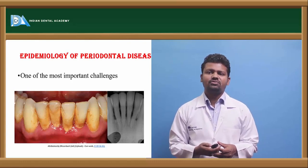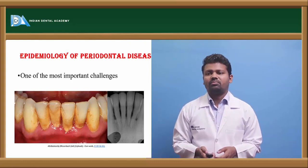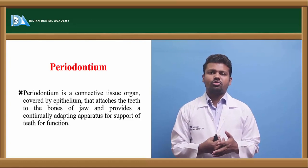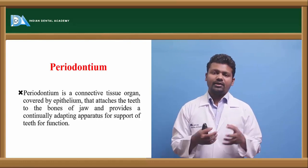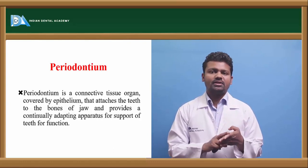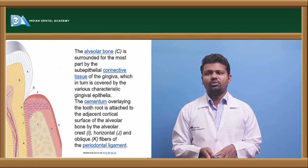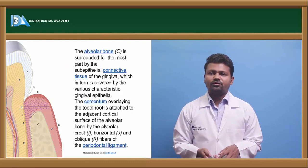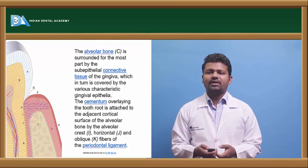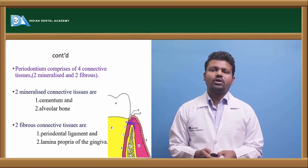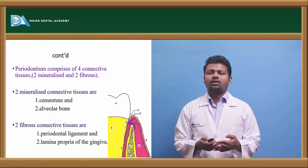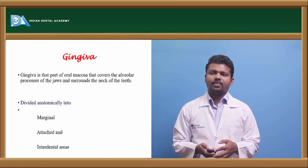Epidemiology of periodontal disease is one of the most important challenges in dentistry. The periodontium is a connective tissue organ covered by epithelium and attached to the teeth and jaw, providing support to the teeth. It consists of four components: gingiva, periodontal ligament, alveolar bone, and cementum. The periodontium comprises two mineralized connective tissues — cementum and alveolar bone — and two fibrous connective tissues — the periodontal ligament and the lamina propria of the gingiva.